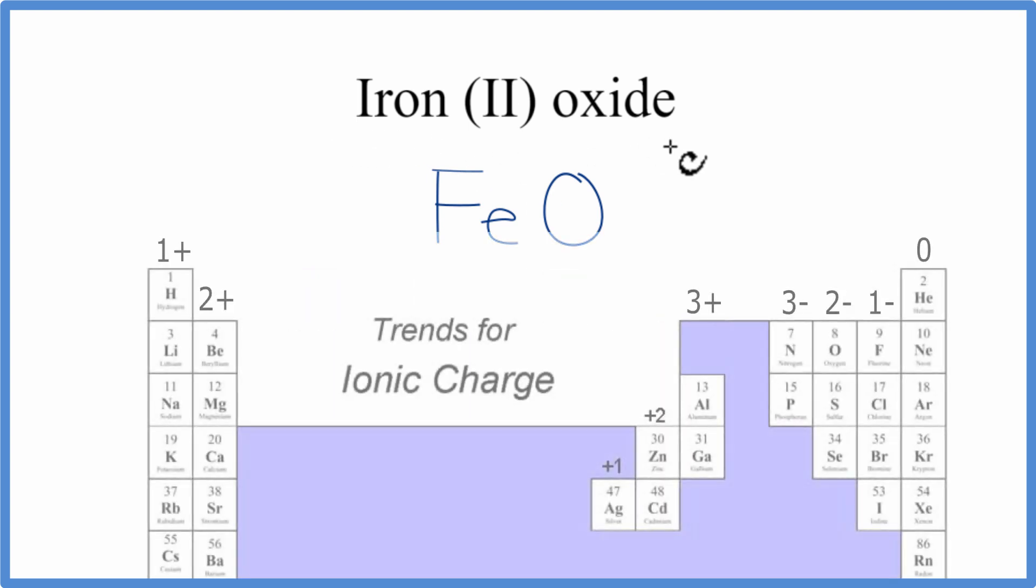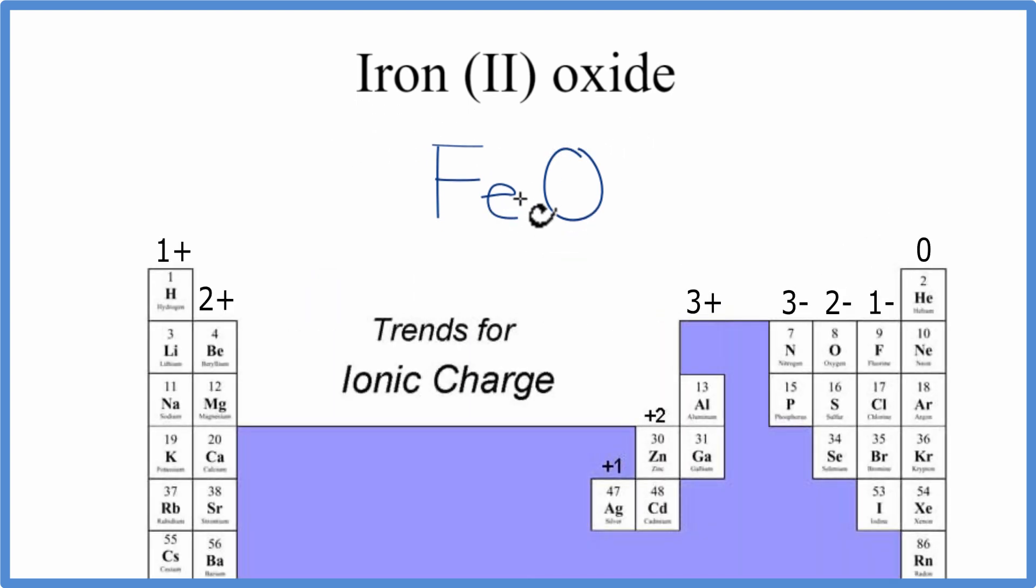But we have a little help with the name. Iron, that's a transition metal, so it can have different charges, but we're told right here that it has a 2 plus charge. So that Roman numeral II, that tells us the charge on the iron atom. We look back to the periodic table, and oxygen, that has a 2 minus charge.